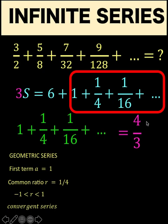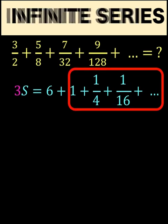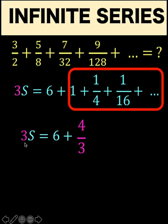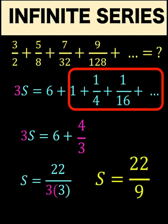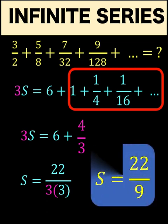So substituting now 4 third to this part that is inside the box, we now have this value. 3S is equal to 6 plus this part here, which is 4 over 3. And simplifying, 6 plus 4 over 3 is 22 over 3. And dividing both sides by 3 to get the value of S, S is equal to 22 over 9. So the value of this infinite convergent series is 22 over 9.